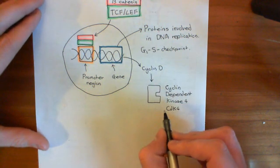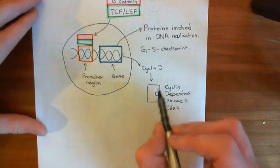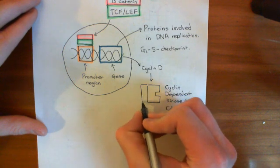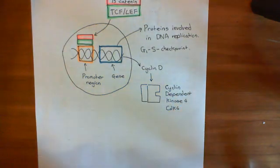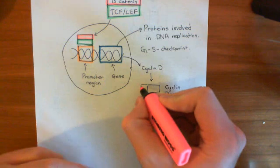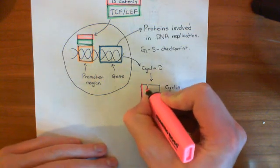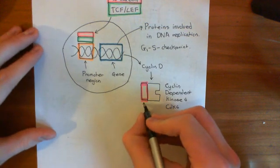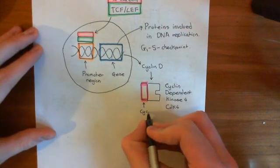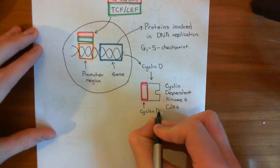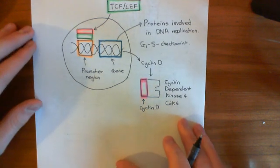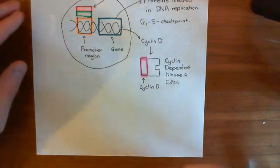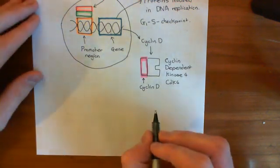When cyclin D is made, it binds to cyclin-dependent kinase 4. Here's the cyclin D — shown in pink — binding to CDK4, and that activates CDK4. The activated cyclin D-CDK4 complex then goes and phosphorylates a protein in the cytoplasm known as the retinoblastoma protein.